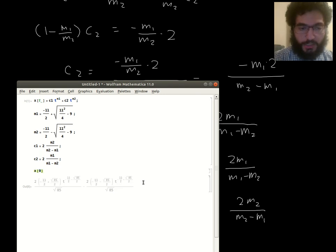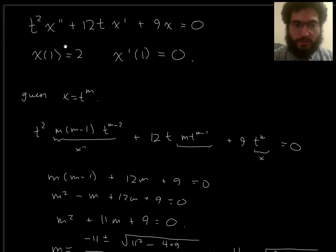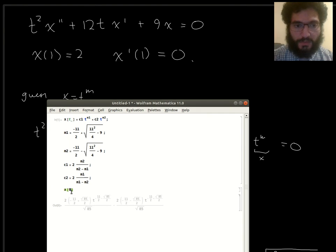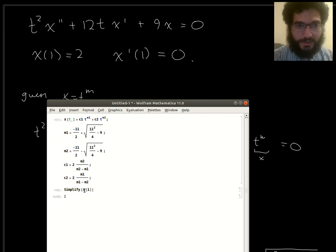And let's just check that this really does solve the initial value problem. So three things, the differential equation and the two initial conditions. So let's try the initial conditions first. Not x of 0, x of 1. Well, that doesn't look like 2, but maybe if I simplify it. OK, great. That is 2.